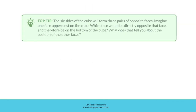Top tip: The six sides of the cube will form three pairs of opposite faces. Imagine one face uppermost on the cube — which face would be directly opposite that face and therefore be on the bottom of the cube? What does that tell you about the position of the other faces?